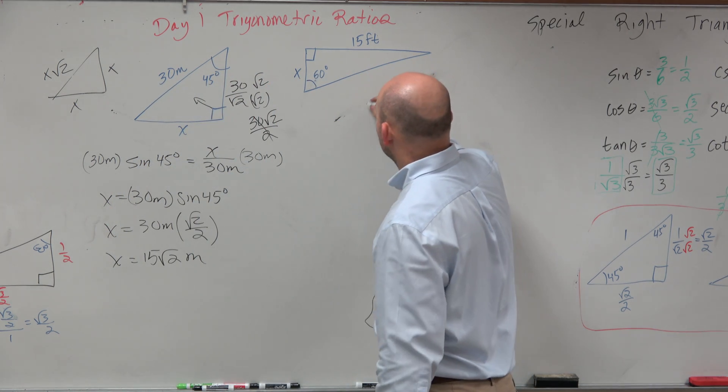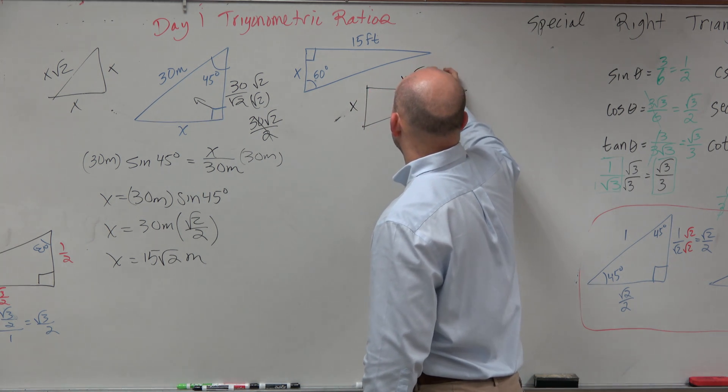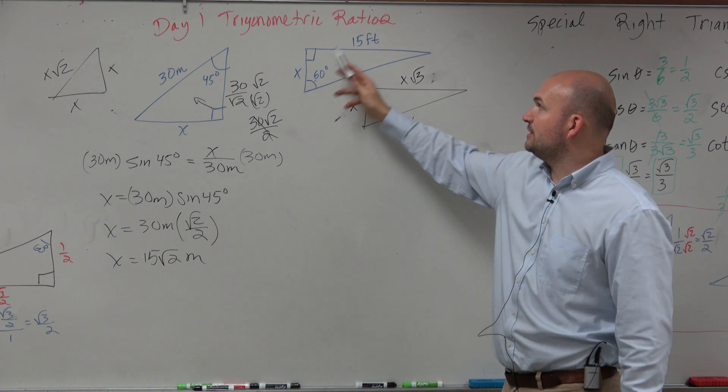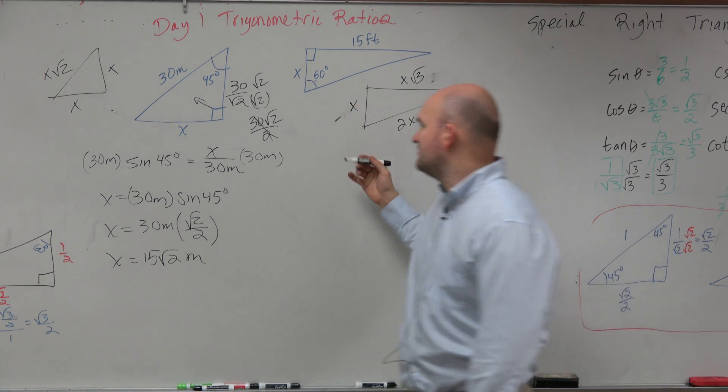If this is my short leg, then that's 2x. That's x square root of 3. So therefore, to go from here to here, you multiply by square root of 3. So to go from here to here, you just have to divide by square root of 3.